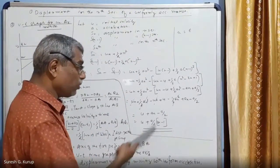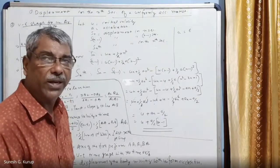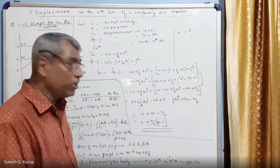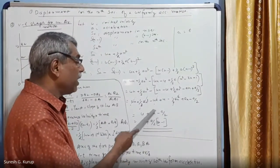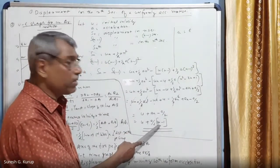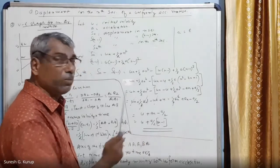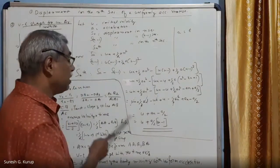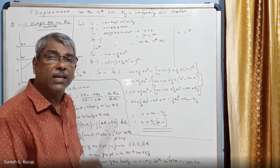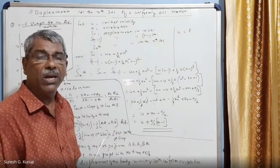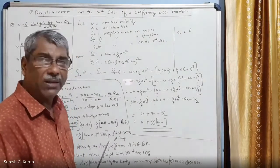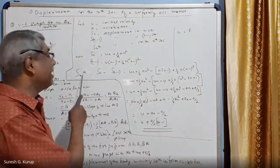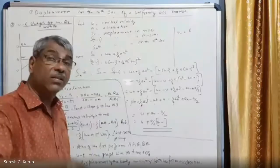Taking a/2 as a common factor from the terms an minus a/2: an divided by a/2 gives 2n, and a/2 divided by a/2 gives 1. So the final formula for displacement of the body in the nth second of motion with uniform acceleration is: S_n = u + (a/2)(2n - 1).